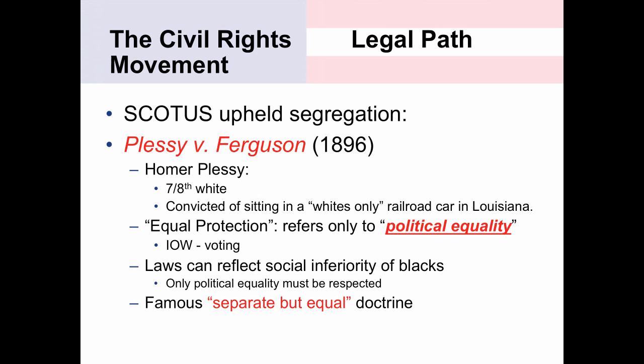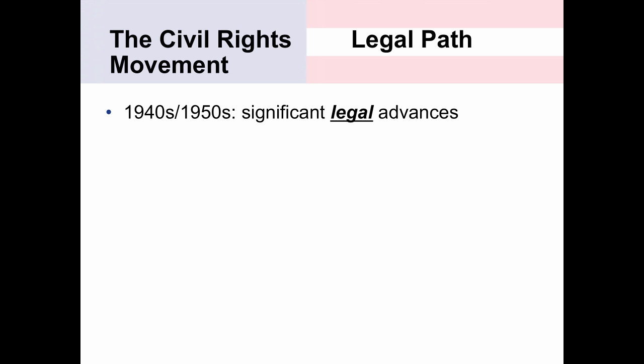It was not until the 1940s and 1950s that African Americans began to gain significant legal advances in the courts. They began to challenge these laws using a very strategic approach. The NAACP — a prominent civil rights organization still very powerful and active today — developed a legal strategy that has become the basis for many other civil rights movements that followed it.